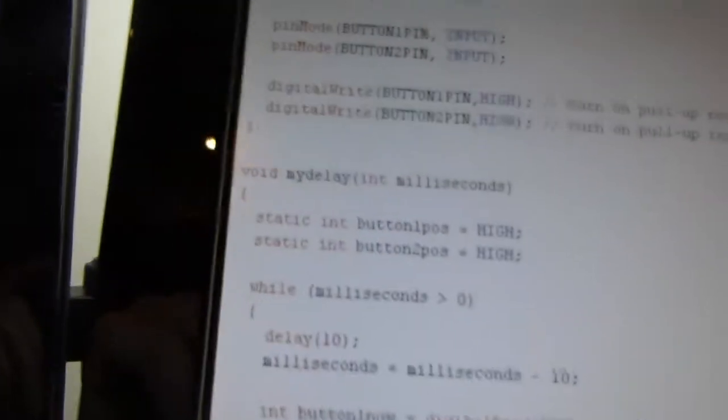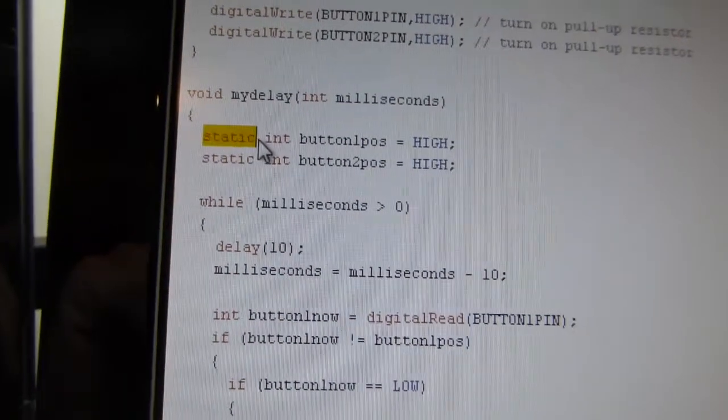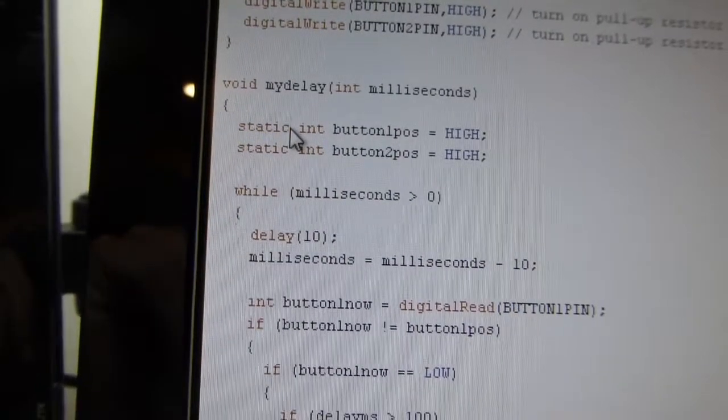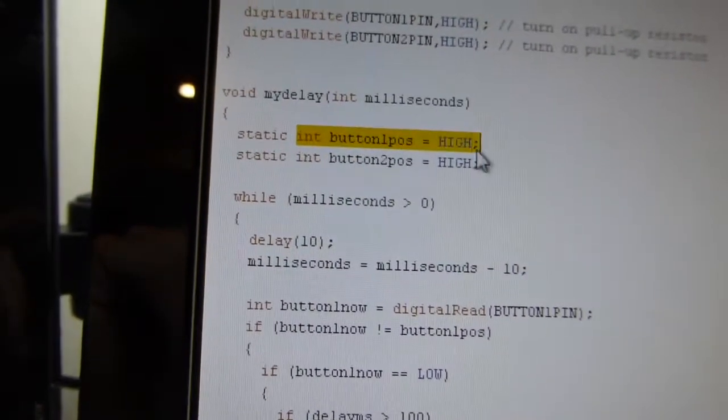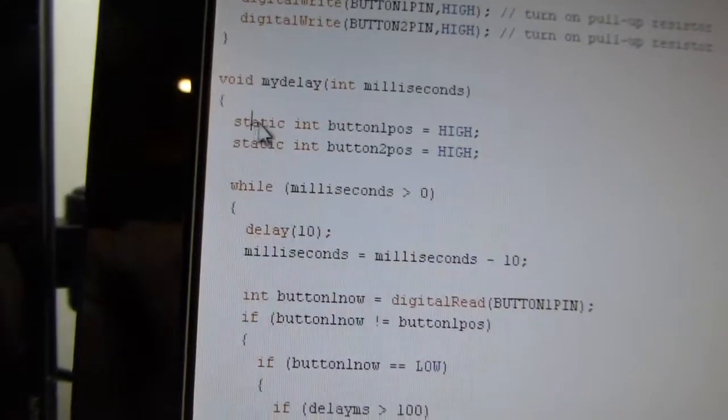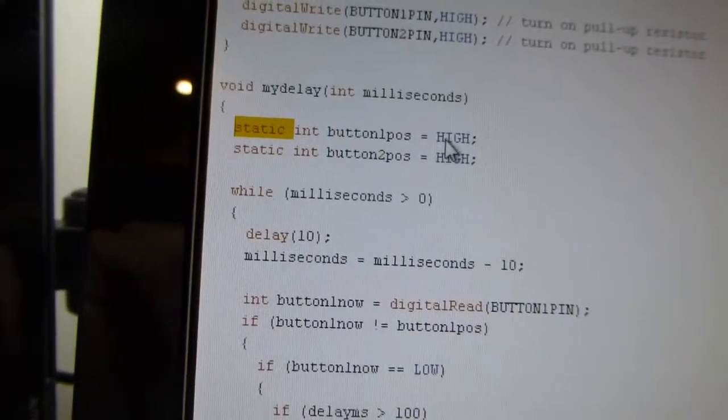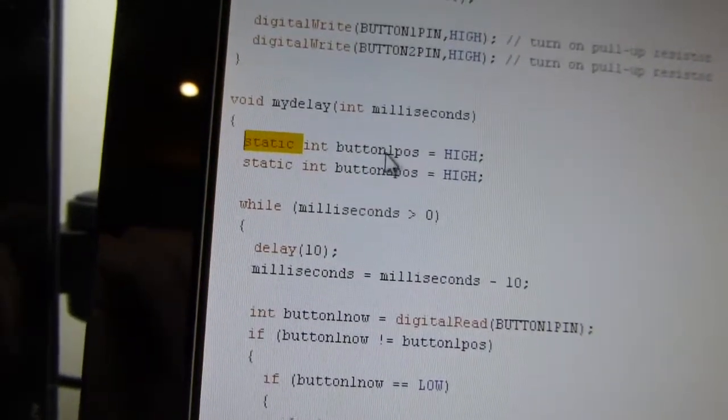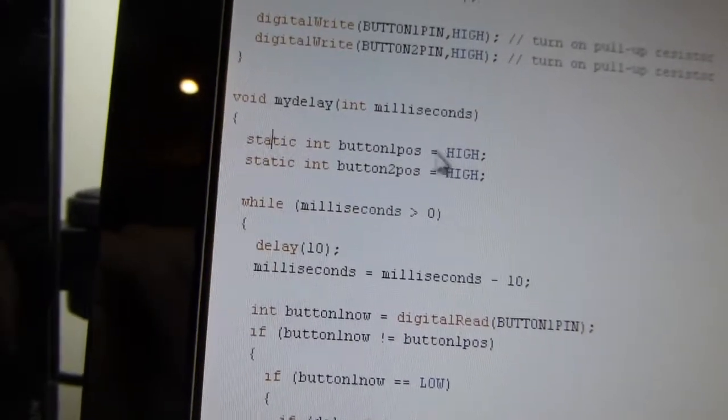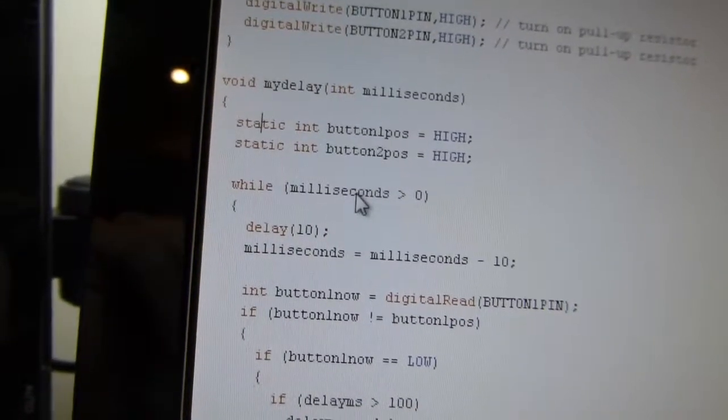So what it's doing inside of here is it has this static int. Static is another keyword that we're learning here. Static is this function, this value is still inside this function it's only used by this function but if the static wasn't here then this value would be set back to high every time you came back into this function. With static here it's only set once and then it's left alone. If something in this function changes it it stays changed.